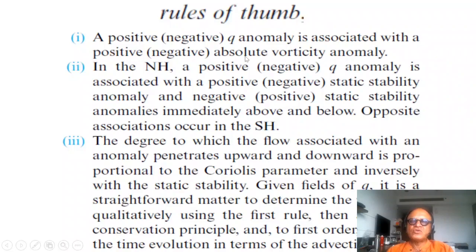Rule of thumb one: a positive q anomaly is associated with a positive absolute vorticity anomaly, and vice versa. In the northern hemisphere, a positive q anomaly is associated with negative static stability.